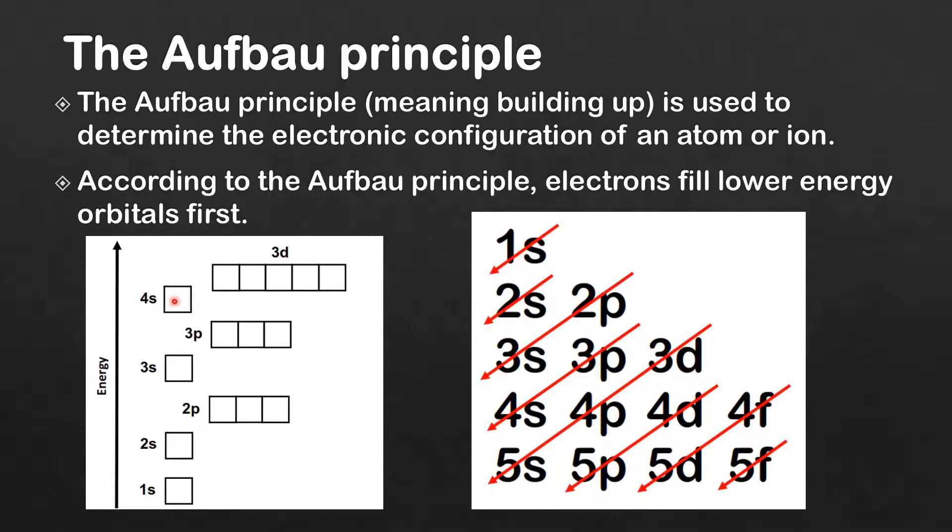After the 3d orbitals are full, we start filling the 4p, then we move on to the 5s, then the 4d, then the 5p, then the 4f, then the 5d, and finally the 5f orbitals.